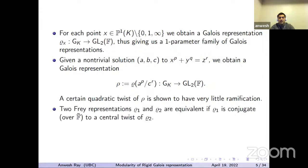Two Frey representations are considered equivalent if they are conjugate over the algebraic closure of F — that is, if the projected representations are conjugate. So we have this equivalence relation, and the idea is that we can actually classify Frey representations up to equivalence.